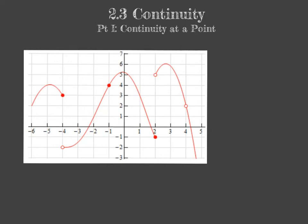Welcome to section 2.3 continuity, where we'll be discussing in part 1 continuity at a point. In this video we're going to be looking at an ugly graph. I'm using a blue pointer because this graph is red. So let's take a look at this piecewise function. We can see that it is definitely split into three distinct pieces. There are some holes and jumps in this graph.